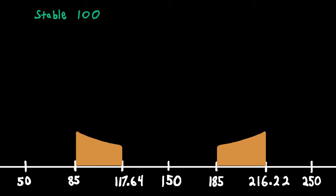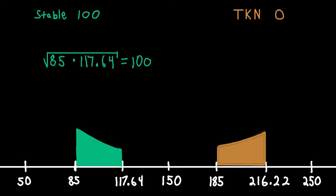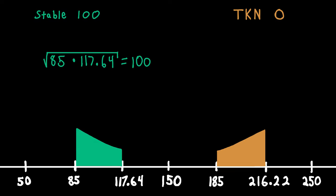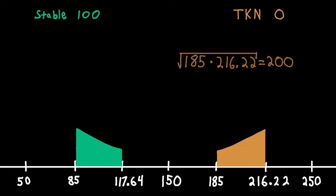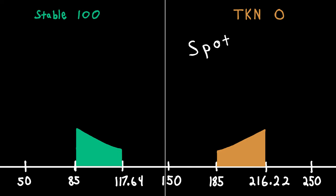This strategy has 100 stable and 0 TKN, with a buy range from $85 to $117.64, with the average being at 100, and a sell range from $185 to $216.22, with the average being at $200. The price of the token is $150, and the price starts to dip.